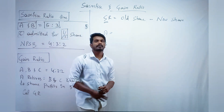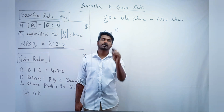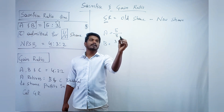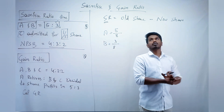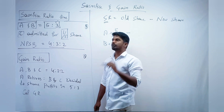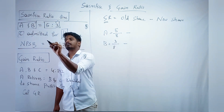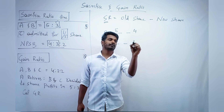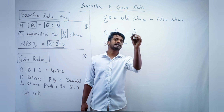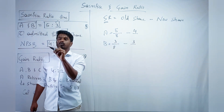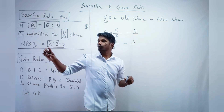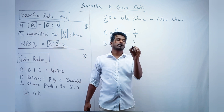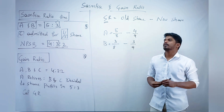So let us begin. Write A and B. Old share minus new share. What is the old share? For A it is 5/8 (since 5+3=8), and for B it is 3/8. Now the new share: for A it is 4/9 and for B it is 3/9 (denominator is 4+3+2=9).